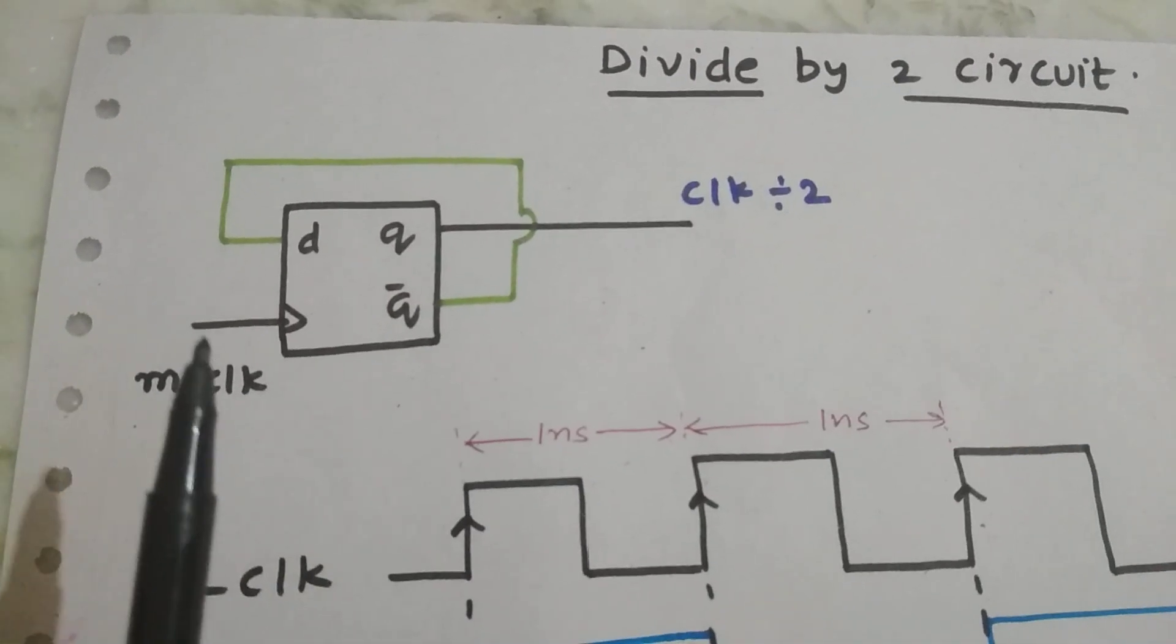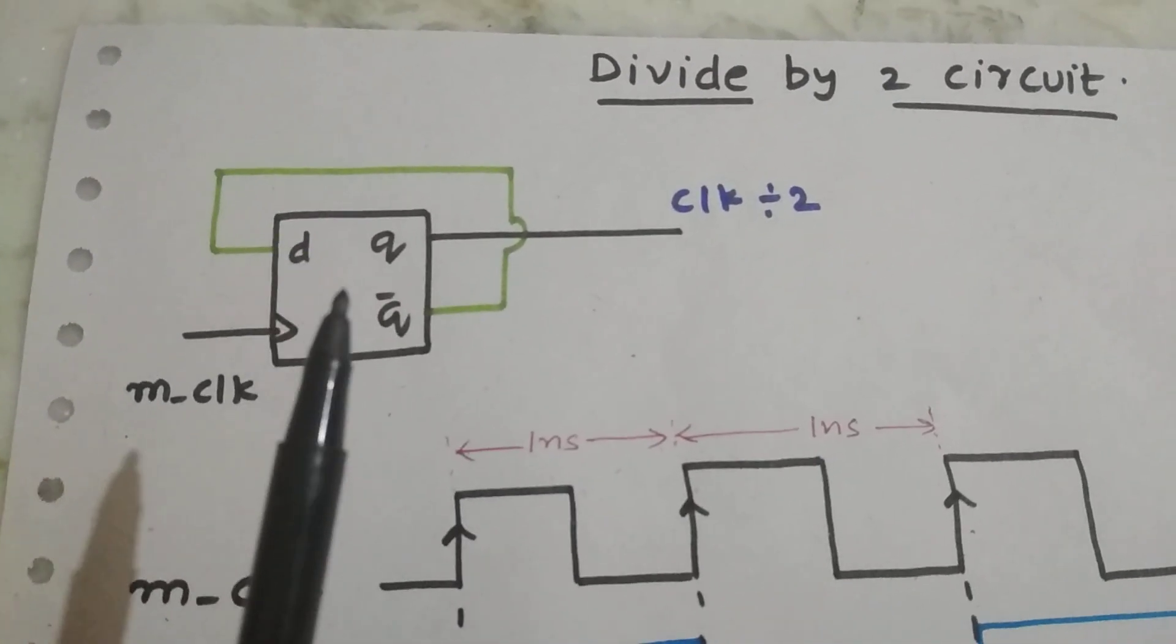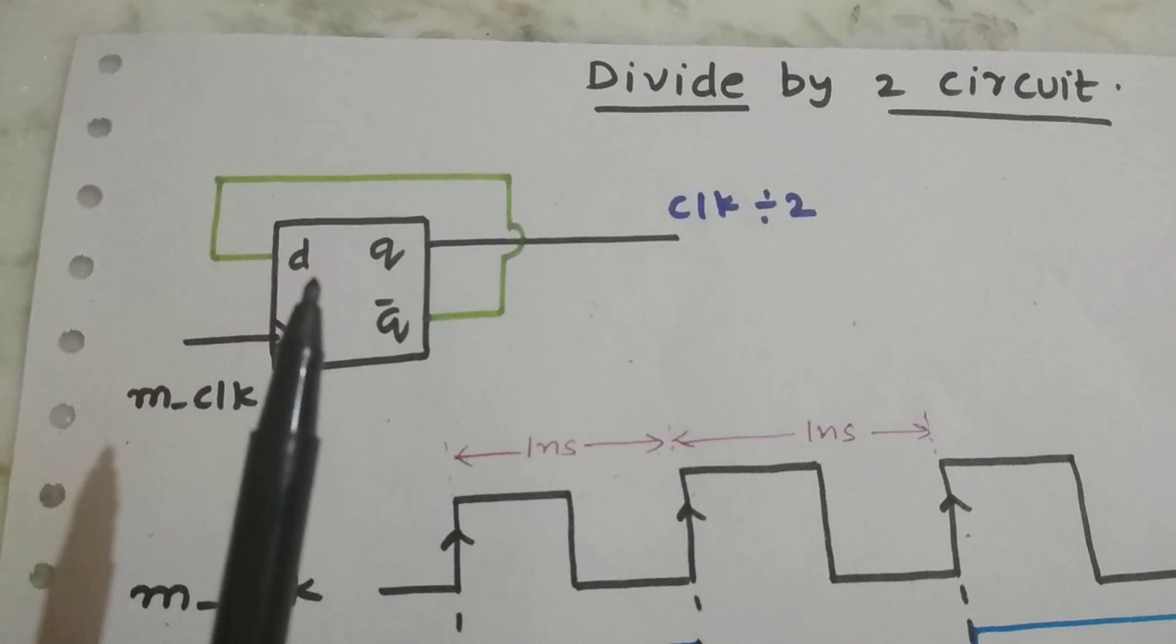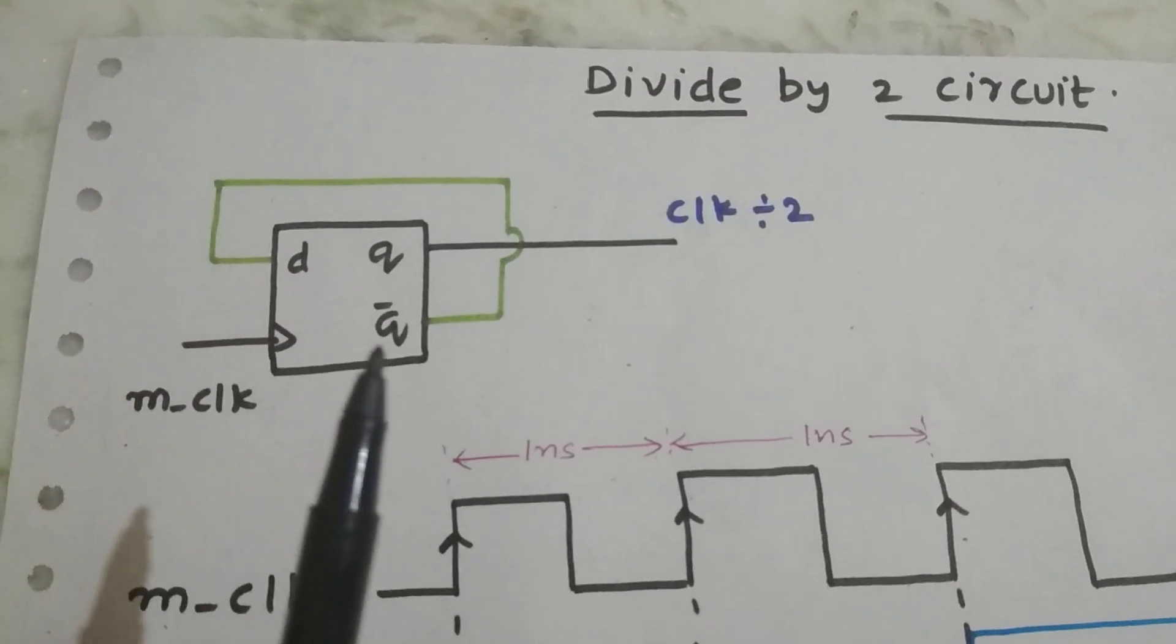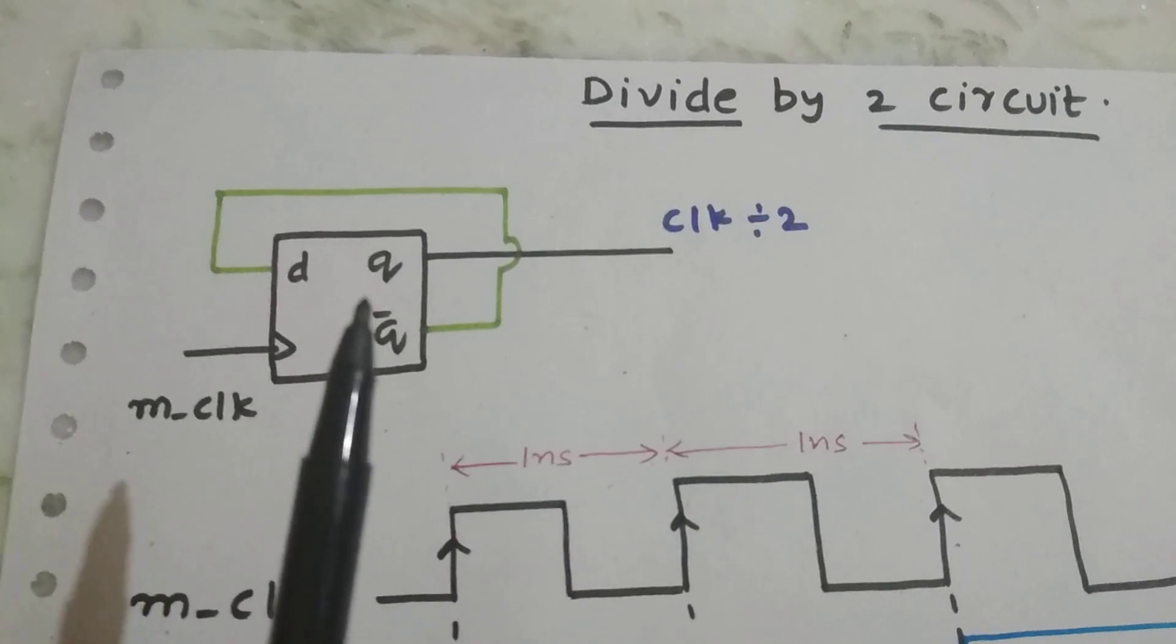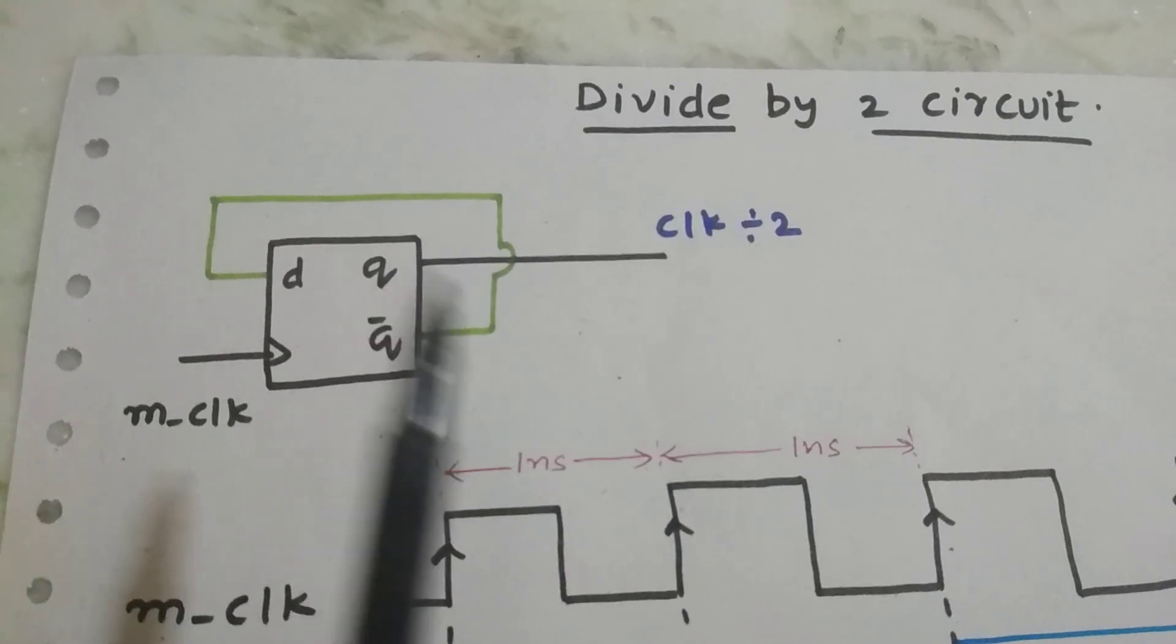We supply the master clock to a D flip-flop where the D flip-flop input is given by a feedback of Q bar, and the output is taken from Q.